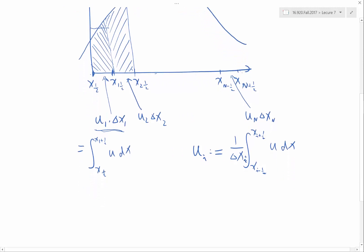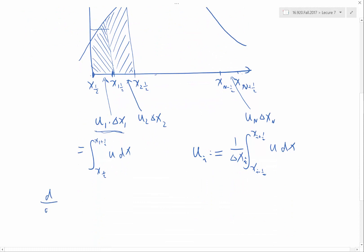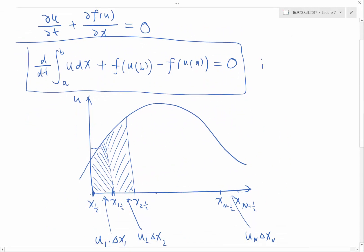The volume averages are very closely linked to the integral form of the governing equation because if I divide both sides by delta xi and choose my a to be xi minus half and b to be xi plus half, then what I get is d/dt of ui, which is equal to, by definition, 1 over delta xi times d/dt of the integral from xi minus half to xi plus half of u dx. And this quantity is what appears in the integral form of the governing equation.